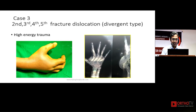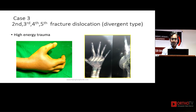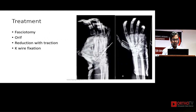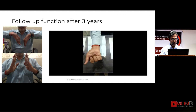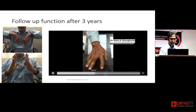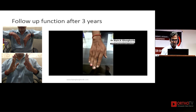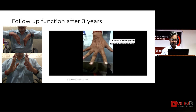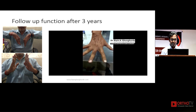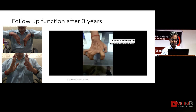This is a divergent type of injury — you can see that all the metacarpals are divergent. These are very high energy trauma injuries associated with compartment syndrome, so fasciotomy is a must. Open reduction and fixation with multiple K-wires was performed, and after three years the patient has a fairly good amount of movement, though the patient complains of some minor issues that don't really cause functional deficit.